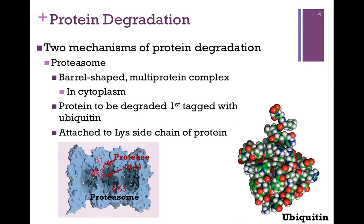The second type of mechanism involves a proteasome. It's a barrel-shaped, multi-protein complex — an actual protease — pictured at the bottom left, so you can see that barrel structure. It's in the cytoplasm; it's not a separate organelle, just a protein complex. The protein to be degraded is first tagged with a molecule called ubiquitin, attached to lysine side chains of the protein, and that tags it for delivery to the proteasome.